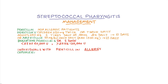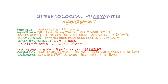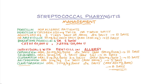For individuals with penicillin allergy, options include: cephalexin oral 20 mg/kg per dose twice daily (maximum 500 mg/dose) for 10 days; cefadroxil oral 30 mg/kg once daily (maximum 1 g) for 10 days; clindamycin oral 7 mg/kg per dose three times daily (maximum 300 mg/dose) for 10 days; azithromycin oral 12 mg/kg once daily (maximum 500 mg) for 5 days; or clarithromycin oral 7.5 mg/kg per dose twice daily (maximum 250 mg/dose) for 10 days.